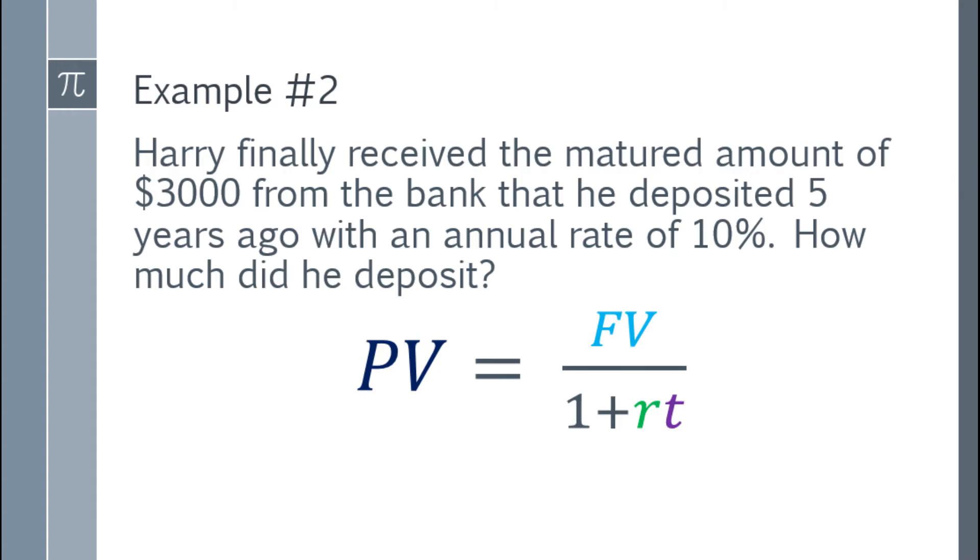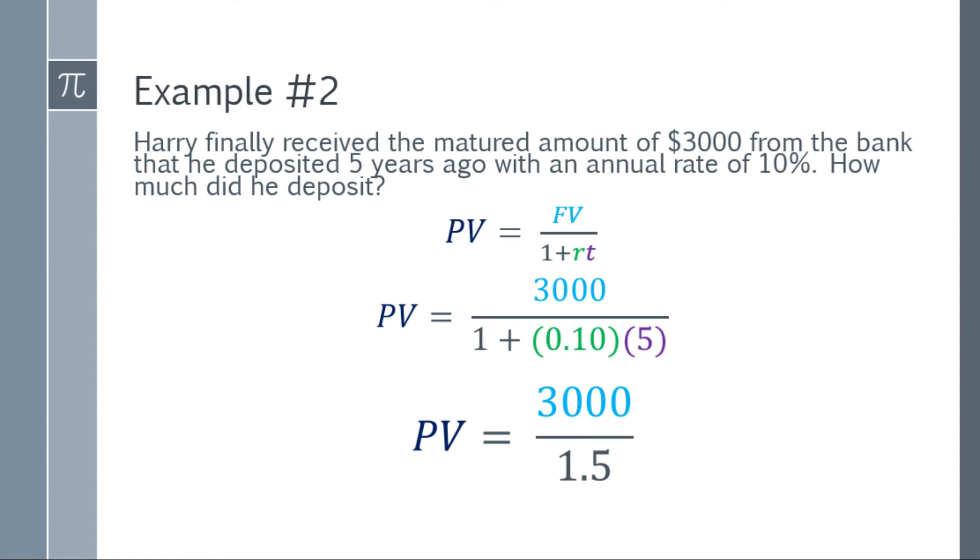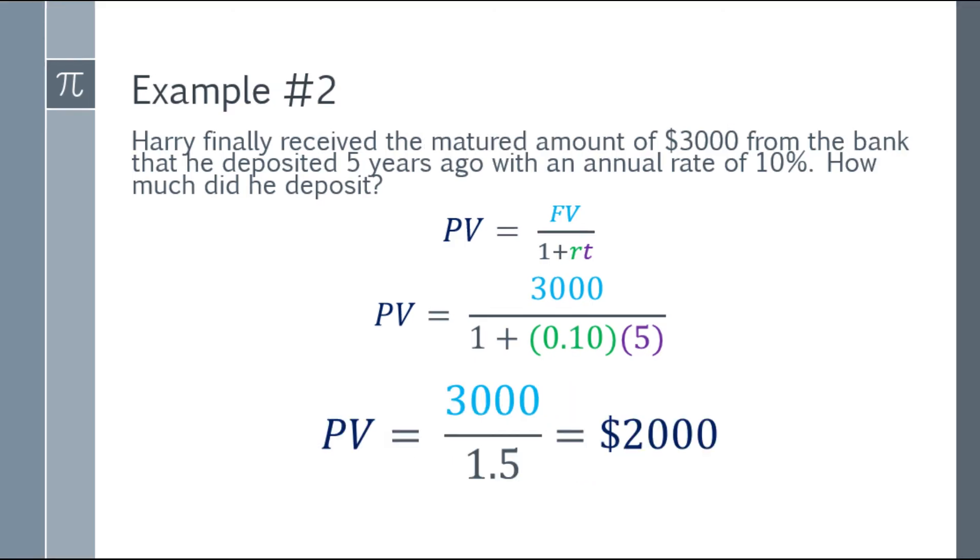Present value is equal to future value over the quantity 1 plus RT. So present value is equal to $3,000 over the quantity 1 plus 0.10 times 5. 0.10 because 10%, 5 because 5 years. So we can simplify it. In the denominator, 0.10 times 5, that will be 0.5. Plus 1, that is 1.5. So simplify it further. 3,000 divided by 1.5, that will be $2,000.